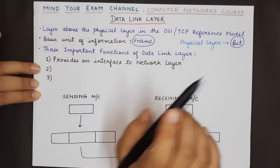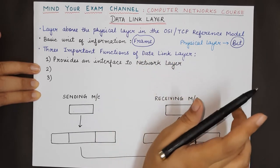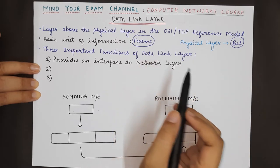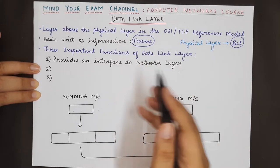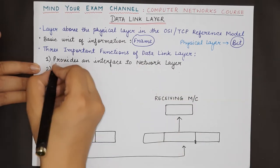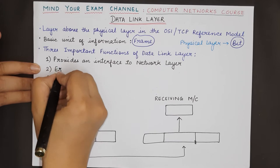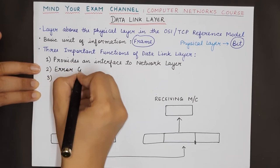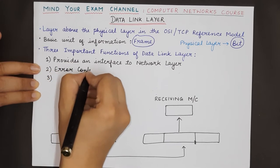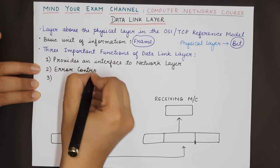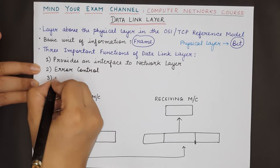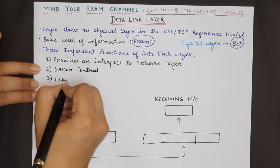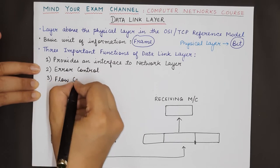The other two important functionalities taken care of by the data link layer are error control and flow control. What do we mean by both these terms?